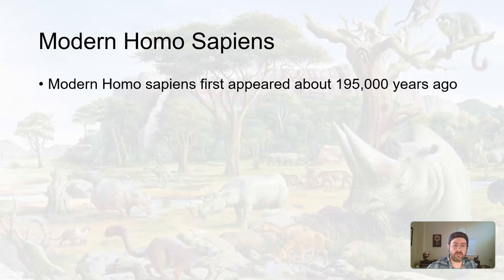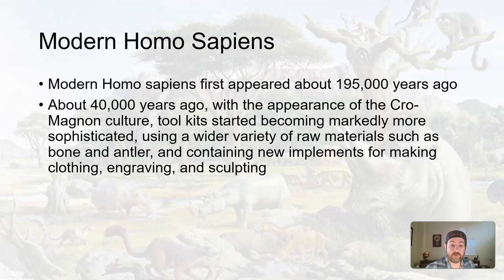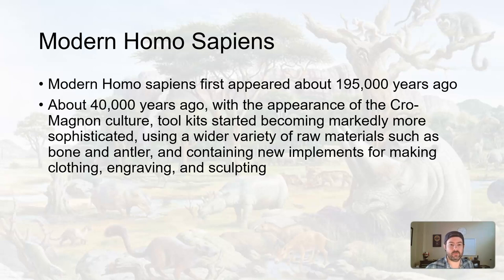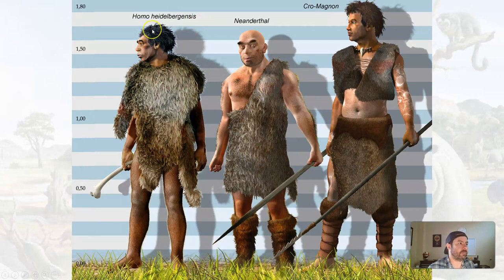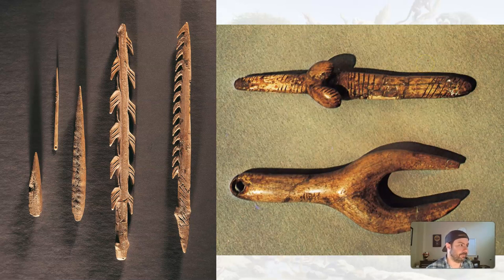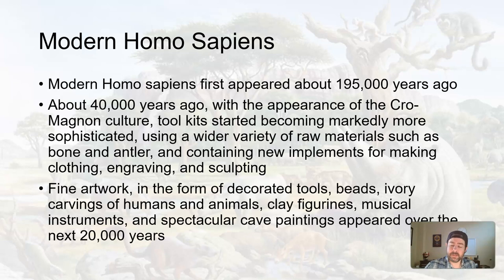Modern Homo sapiens as a species first appeared about 195,000 years ago. About 40,000 years ago, with the appearance of the Cro-Magnon culture, which took hold in Europe for the most part, Homo sapiens began using tools in a more sophisticated manner — using different materials for making clothing, engraving, and sculpting. This shows a level of mental sophistication occurring with the Cro-Magnon culture. The Cro-Magnon culture is also responsible for fantastic cave artwork.